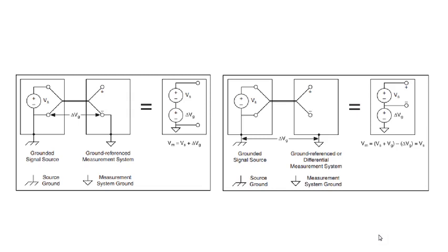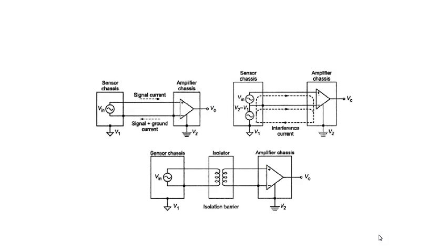When the same signal is measured using a differential amplifier, the difference in ground potentials acts as a common mode voltage. Using a differential amplifier with high common mode rejection ratio removes this common mode voltage, and the measured signal Vz equals Vs plus Vz minus delta Vz, which equals Vs — accurately measuring the required signal. However, some applications require more than a differential amplifier can provide.